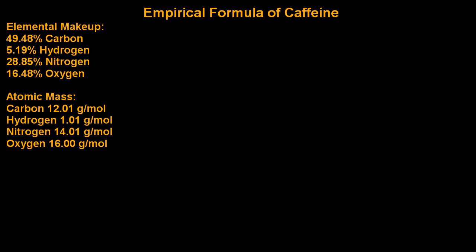In this video, we'll solve for the empirical formula of caffeine. In this case, we're given the elemental makeup in terms of percentages for each element, and we're also given for each element its atomic mass, which you can find on the periodic table.